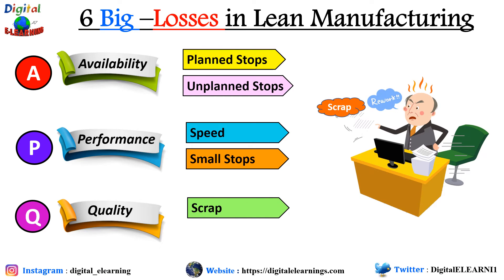The third category of loss is quality, where we capture scrap and rework. Scraps are defective parts that cannot be reworked and are discarded. Rework parts are defective but can be corrected and put back as good parts. With quality, we measure the percentage of good parts produced versus total parts produced — the rest are either scrap or rework.